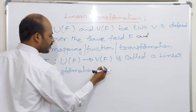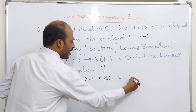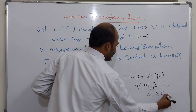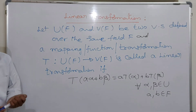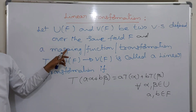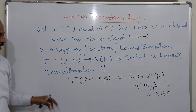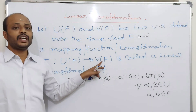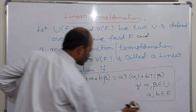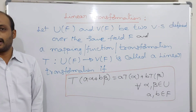T is called a linear transformation from U(F) if it satisfies the condition: T(aα + bβ) = a·T(α) + b·T(β), for all α, β belonging to U and a, b belonging to the field F.